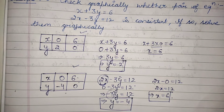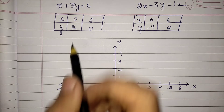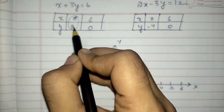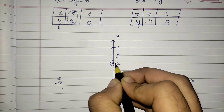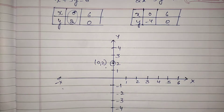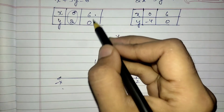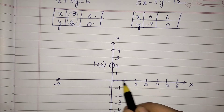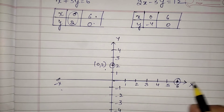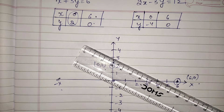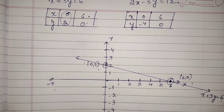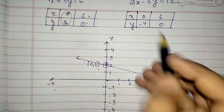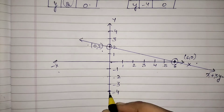Now we can plot these two points on the graph. The first point is (0, 2) — on the y-axis. The second point is (6, 0) — on the x-axis. Join these two points and you get the line for equation x + 3y = 6.